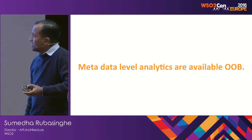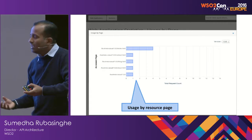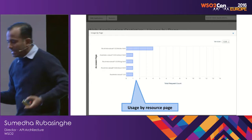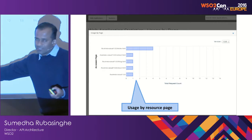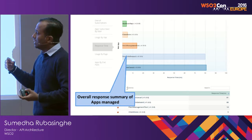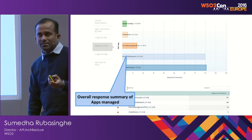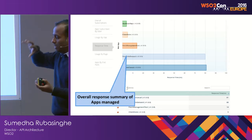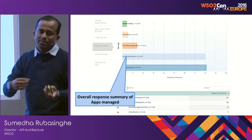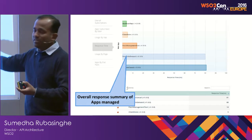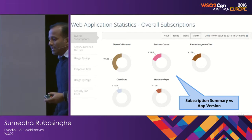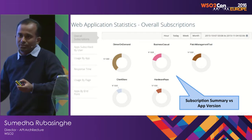To develop and keep improving applications, you need a certain level of statistics. We provide basic statistics such as how a particular application's pages are being used, how many people are subscribing and using it, and what the response time is. This is useful because the App Manager is acting as a proxy between the real application, so it can detect when applications hosted on different environments are failing or have high response times.